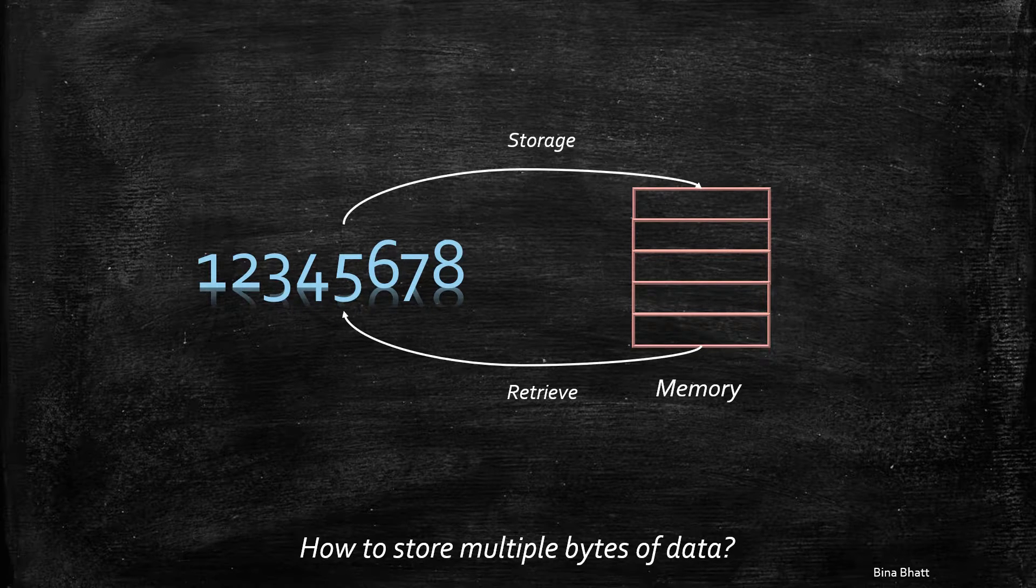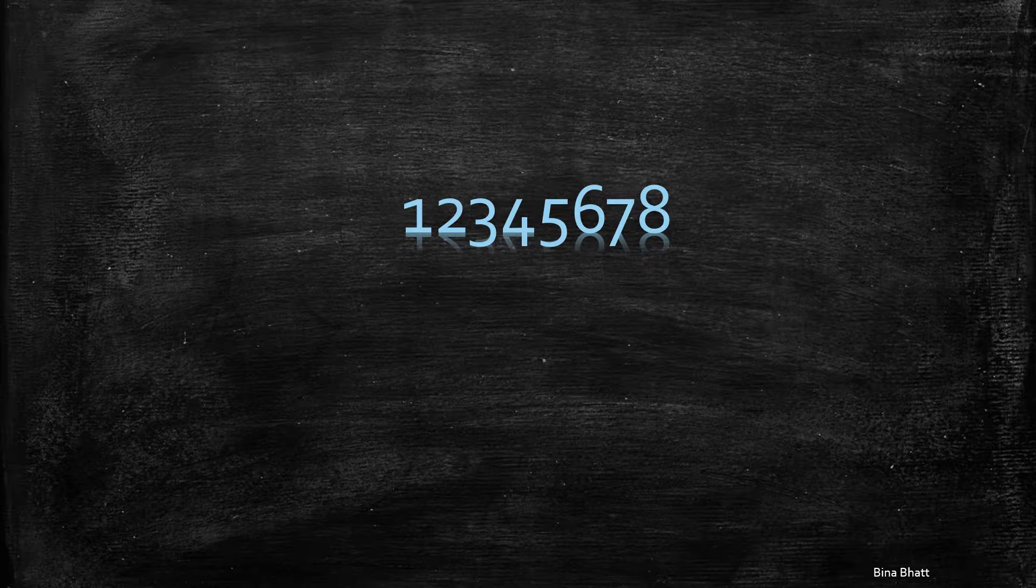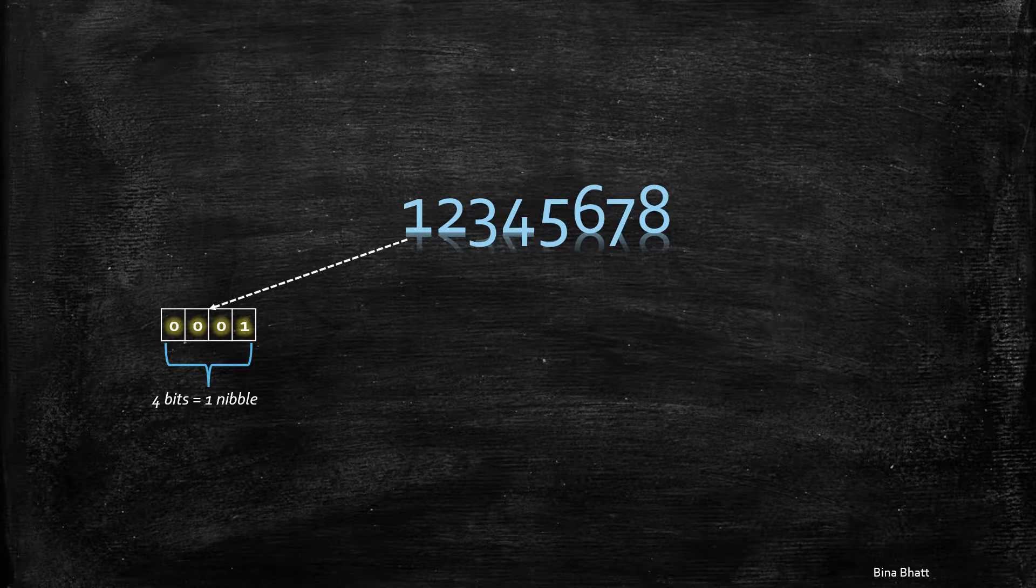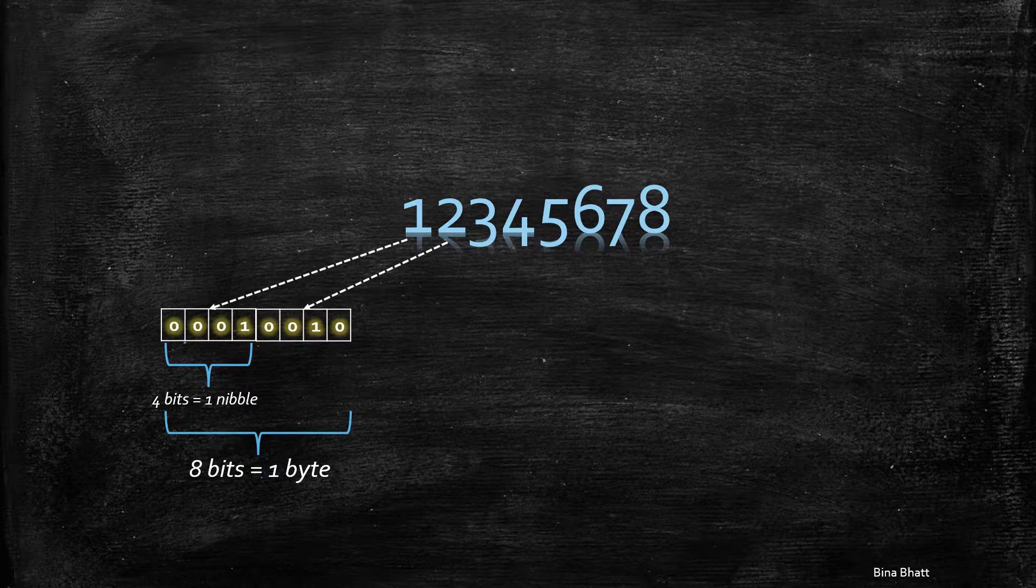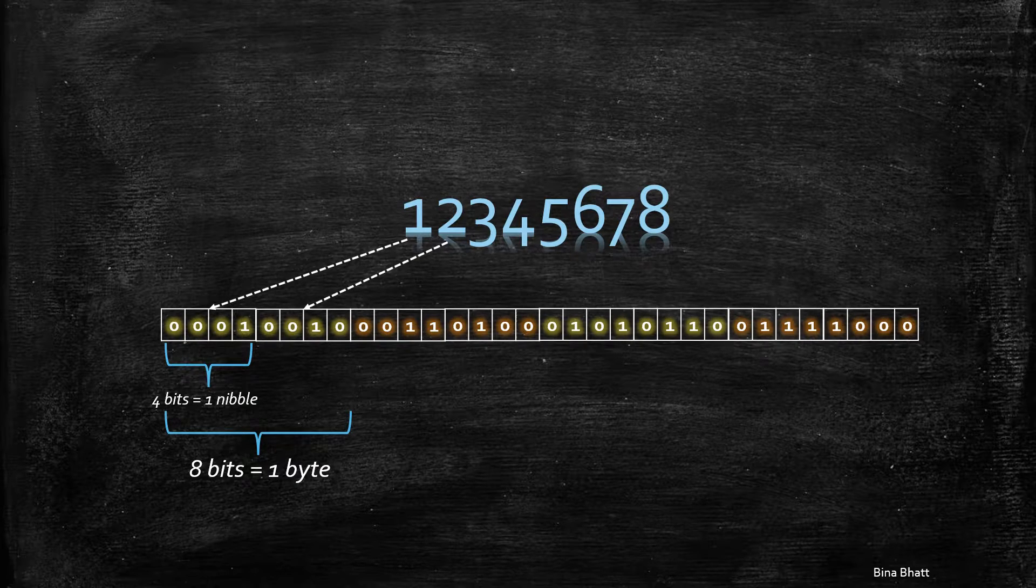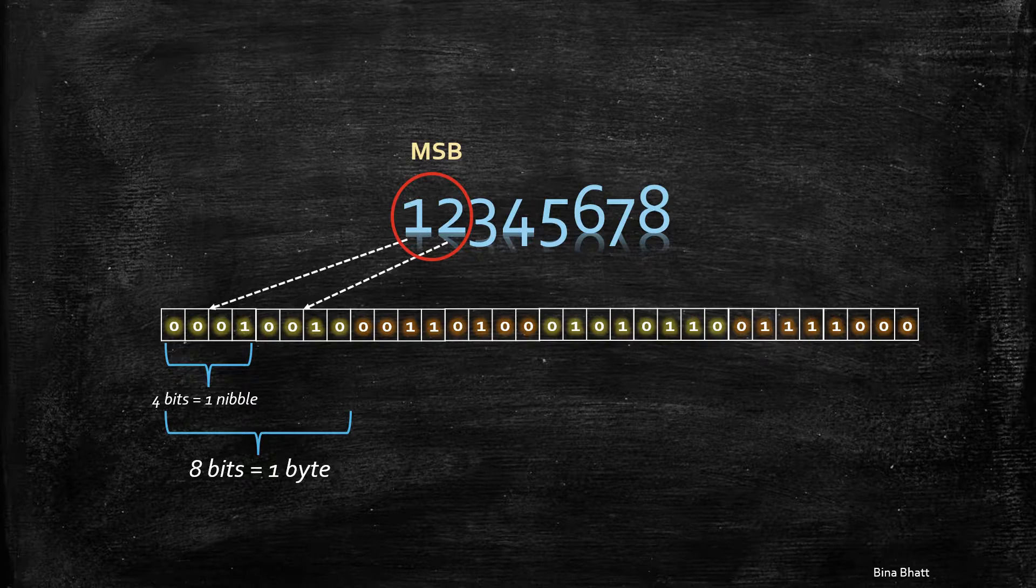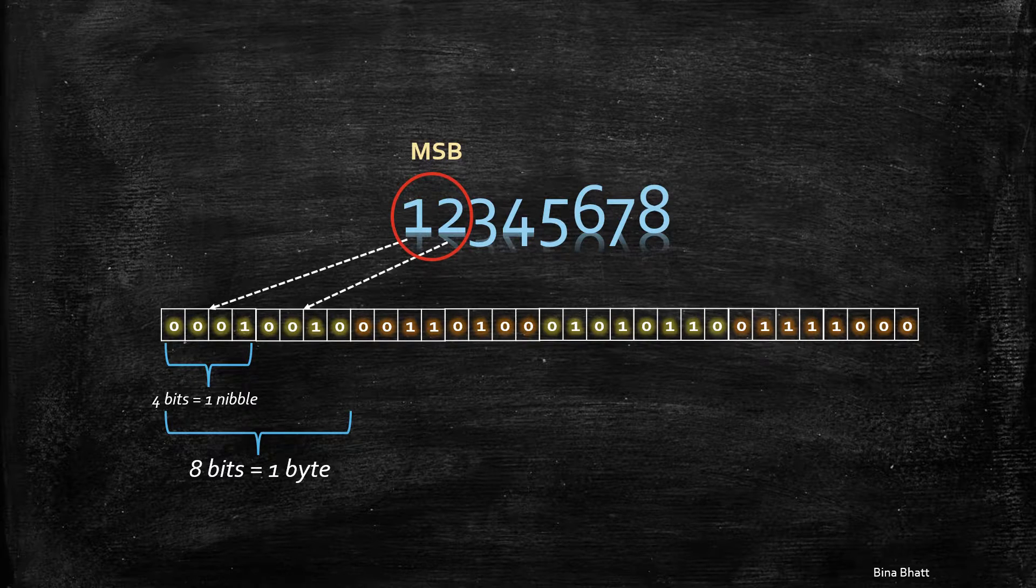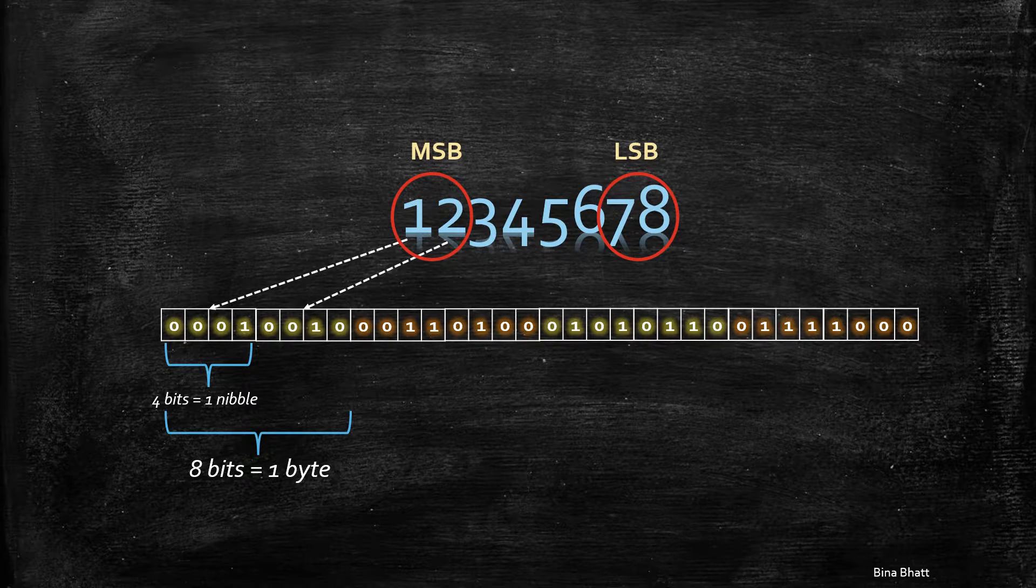First of all, each digit in this number occupies 4 bits or 1 nibble. Thus, 2 digits form a byte. Here, 12 is the most significant byte or MSB and 78 is the least significant byte or LSB.